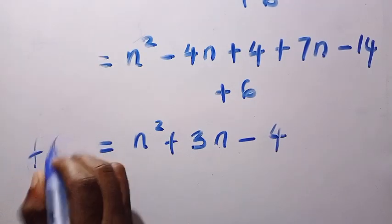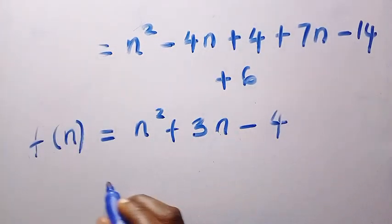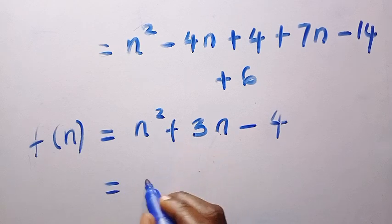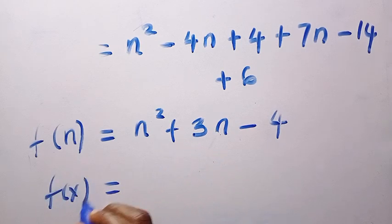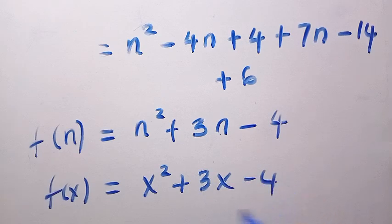So we have f of n equals n squared plus 3n minus 4. And this gives us f of x equals x squared plus 3x minus 4. See you in the next video.